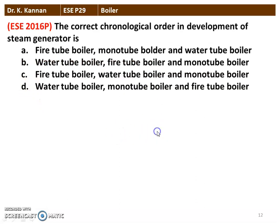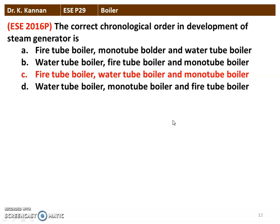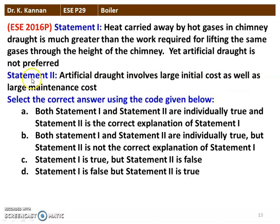Next question from the 2016 question paper: the correct chronological order in the development of steam generators — fire tube boiler, mono tube boiler, and water tube boiler. In a fire tube boiler, flue gases are circulated inside the tubes; in a water tube boiler, water is circulated inside the tubes; a mono tube boiler (also called once-through boiler) is used in supercritical operation. The correct order is fire tube boiler, water tube boiler, and mono tube boiler, in terms of pressure of operation and rate of heat transfer.